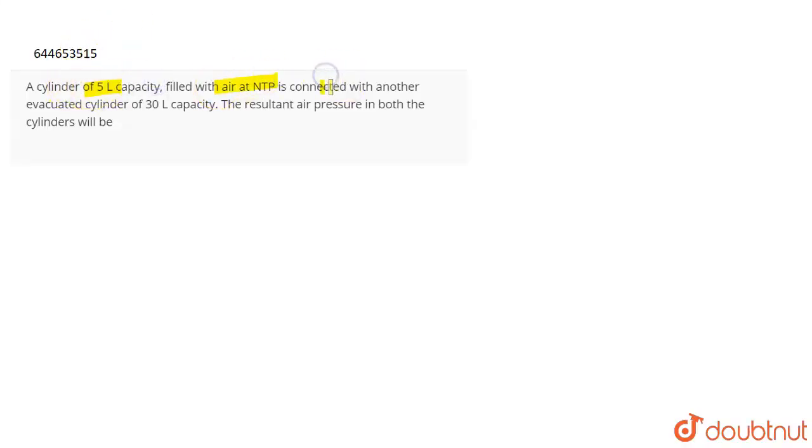5 liter capacity filled with air at NTP is connected with another evacuated cylinder of 30 liter capacity. The resultant air pressure in both the cylinders will be? Okay, so the volume V1 is given to you as 5